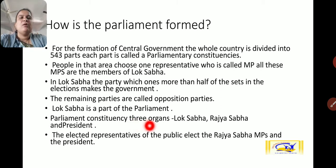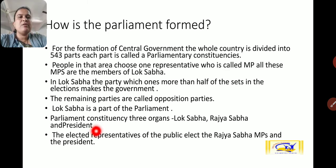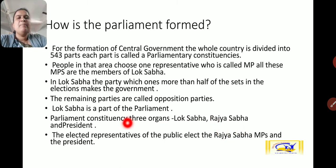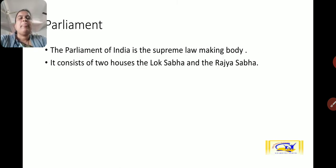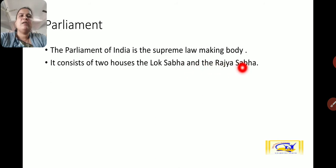Parliament has three organs: Lok Sabha, Rajya Sabha, and the President. Parliament is formed by these three organs. The elected representatives of the public elect the Rajya Sabha MPs and the President. The parliament of India is the supreme law-making body — the highest and supreme law-making body — and it consists of two houses: the Lok Sabha and the Rajya Sabha.